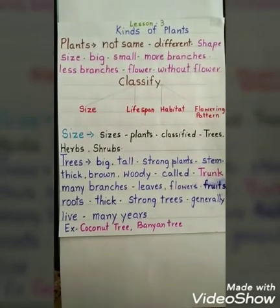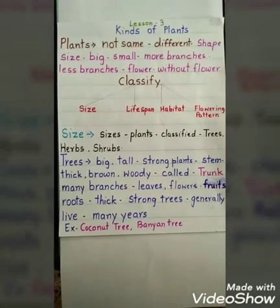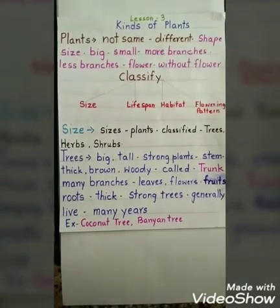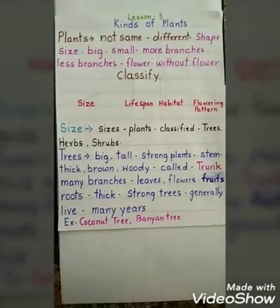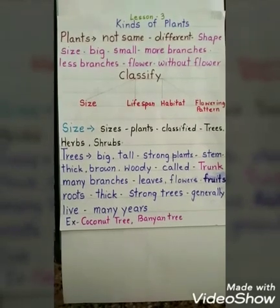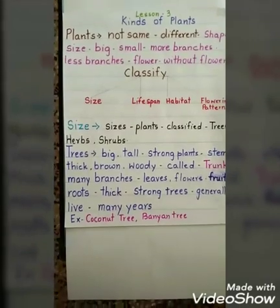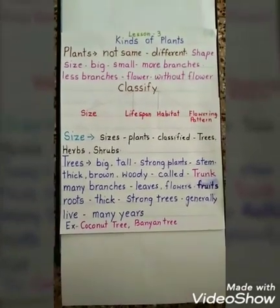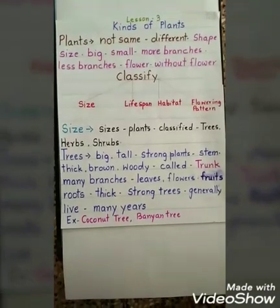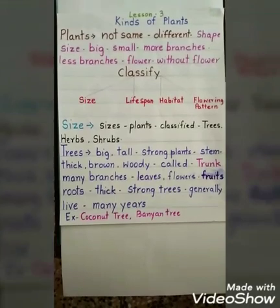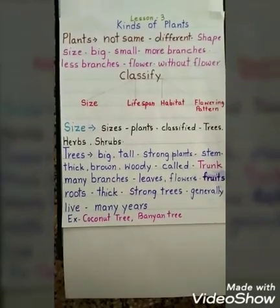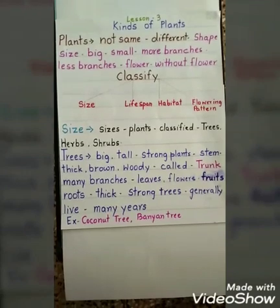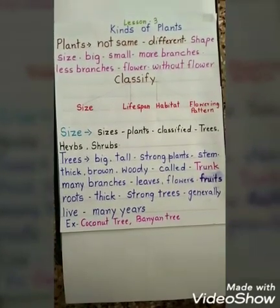Though the plants are the same, they differ in shape and size — some are big and some are small. Some plants have flowers and branches, and some plants have fewer branches and no flowers. Plants are classified based on the following features: size, lifespan, habitat, and flowering pattern.